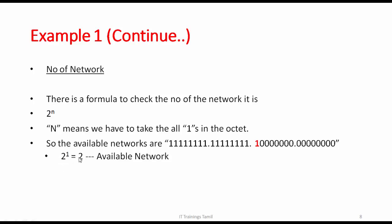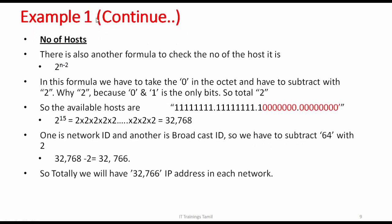We have a Class B subnet. 2 to the power of 1 equals 2. So if we have a Class B, we will calculate: 8 plus 7 is 15. So 2 to the power of 15 equals 32768. So, total IP addresses — we will minus one network IP and one broadcast IP, which means we can't use those by default. So if you need it, we can use that IP.